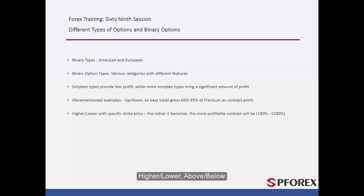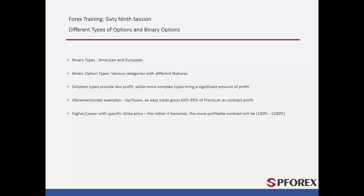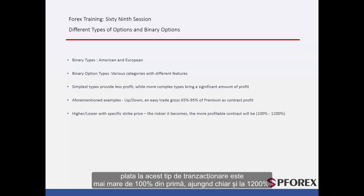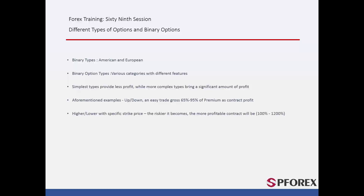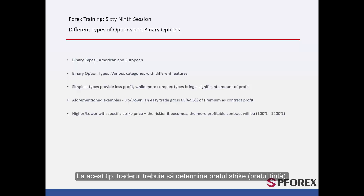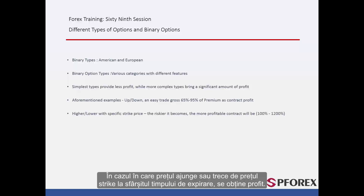Higher or Lower, also called Above and Below, is more intricate than a simple call or put. The payout on this type of trading is more than 100% of the premium, and can even rise to 1,200%. In this kind, a trader must determine the strike price or target price. If the price stands on or crosses the strike price at the end of the expiration time, the profit is derived.